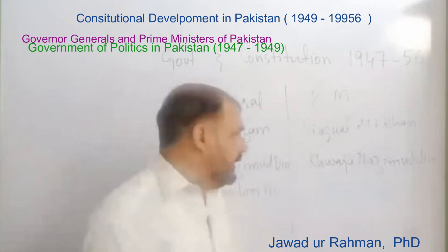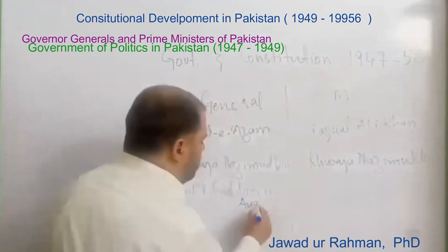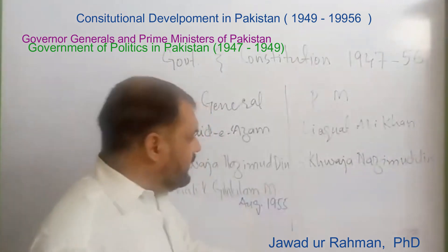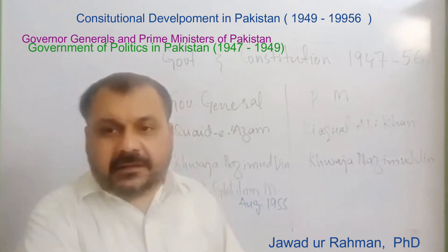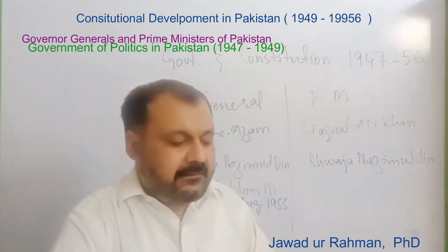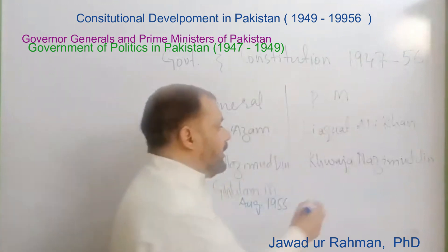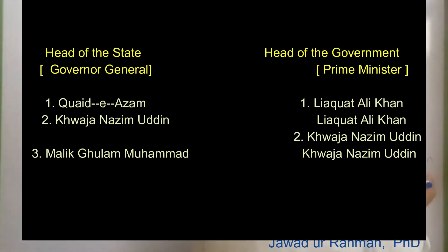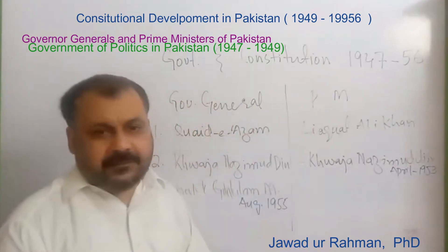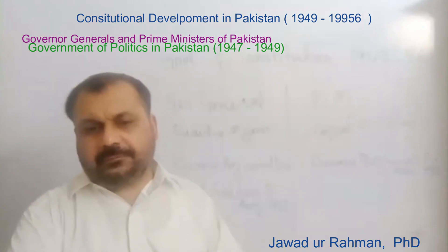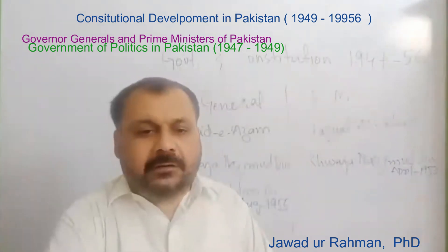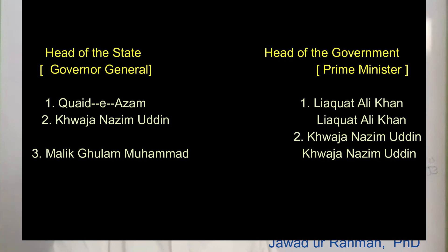In August 1955 Ghulam Muhammad was removed from his position due to poor health. In the meantime, he had utilized the powers granted to him by the Government of India Act 1935. He removed Khawaja Nazimuddin from government in April 1953. One of the stated reasons was that Nazimuddin and his cabinet had failed to draft a constitution for the country over the many years in office.